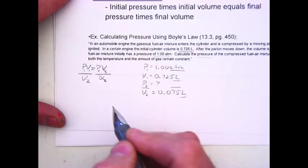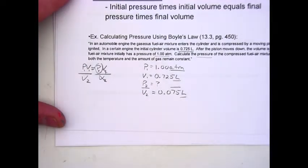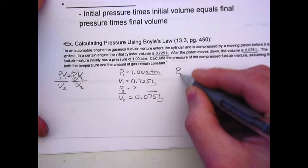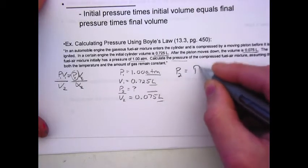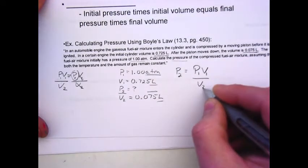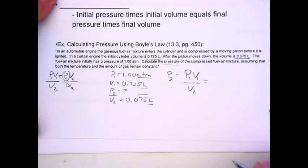V2 cancels. P2 is all by itself on one side of the equation. And rewriting it, we have P2 is equal to P1 times V1 over V2.